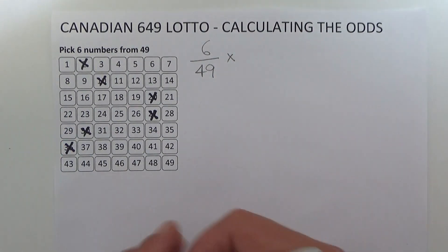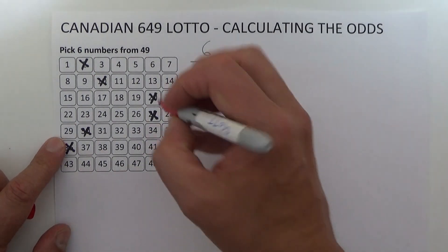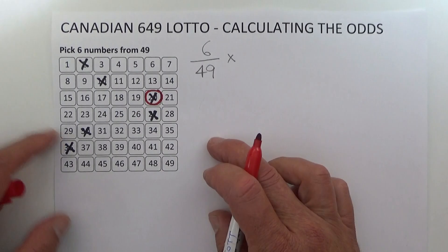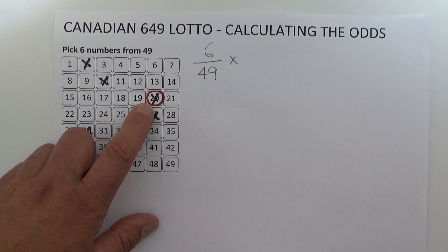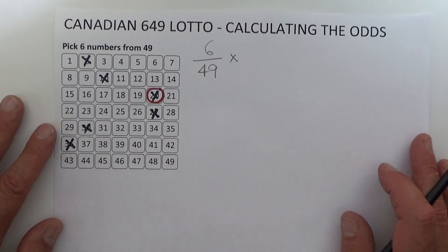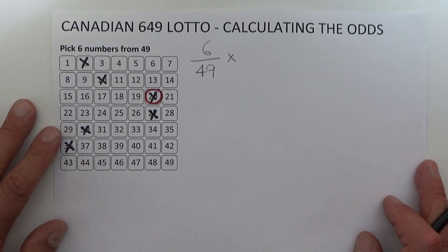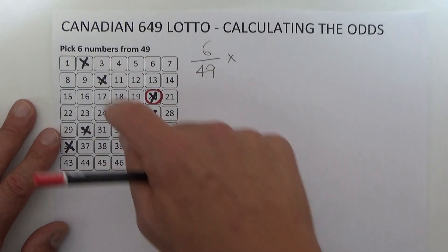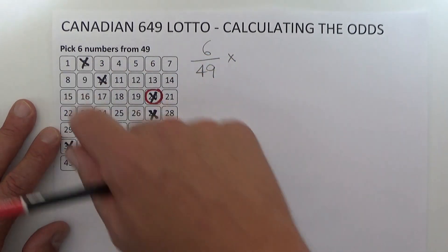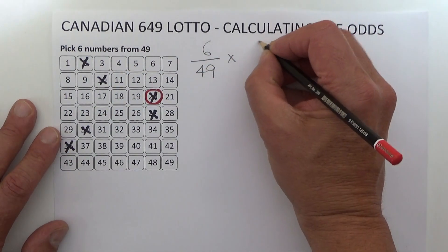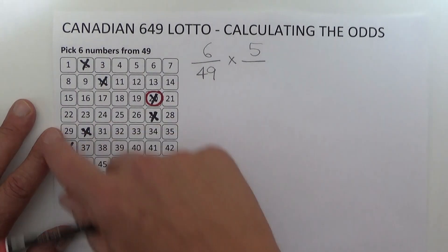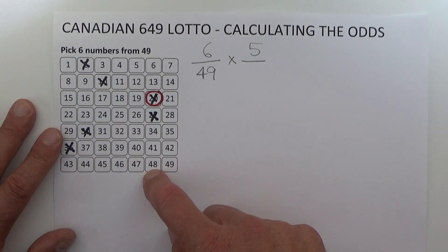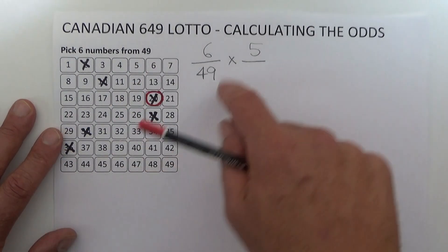I'll circle one of those numbers to show that I've matched the first number drawn. When the second number is drawn, you're left with five chances of matching it. Because one number has already come out of the barrel, there are only 48 balls left, so you've got five chances in 48 of matching the second number drawn.